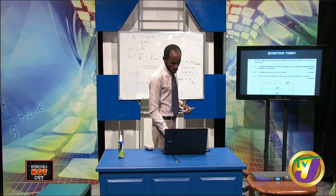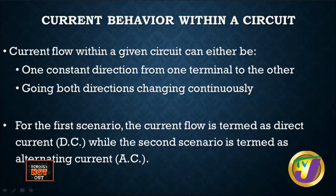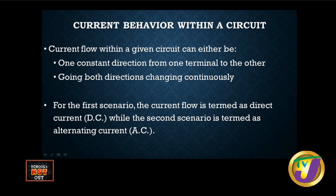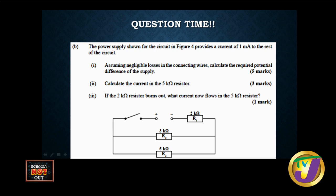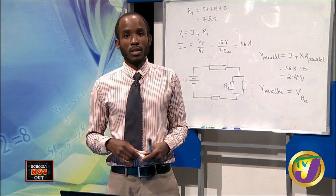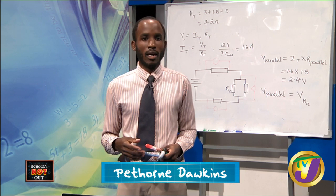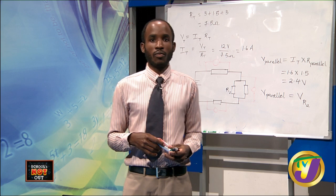Current flow within a given circuit can either be constant from one terminal, going in both directions, or changing continuously. As it relates to Ohm's Law, that's all for today for CSEC Physics. We hope you've grasped the points we've discussed. You can catch a repeat of today's lesson on JNN today at 4pm and in Schools Not Out highlights on Saturday between 1 and 4pm here on TVJ, and on Video On Demand on OneSpot Media. Till next time, I am Pethorn Dawkins. CSEC English is up next. Take care.